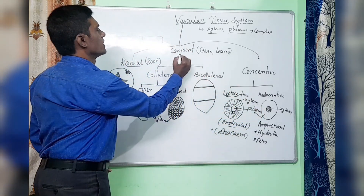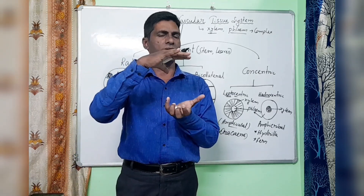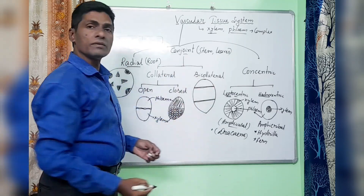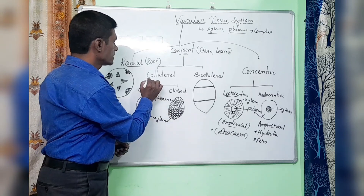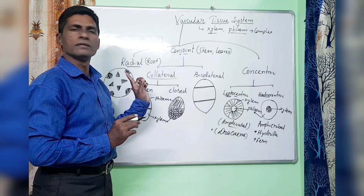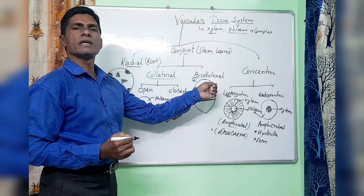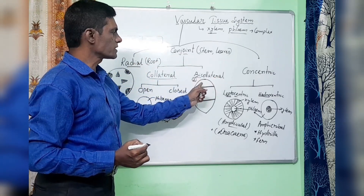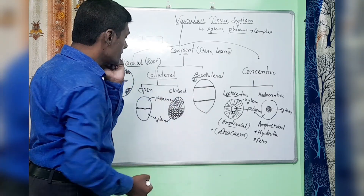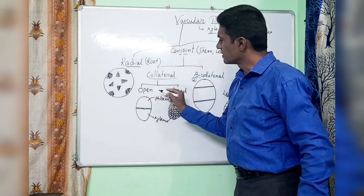Next is conjoint. Conjoint means two patches are joined in the same radius — one circle only. Conjoint bundles are further divided into two groups: collateral and bicollateral. Collateral means both are side by side. Bicollateral means two collaterals — two patches of phloem are on two sides with xylem in the middle.